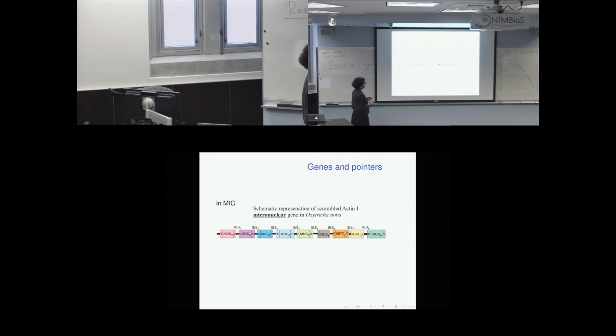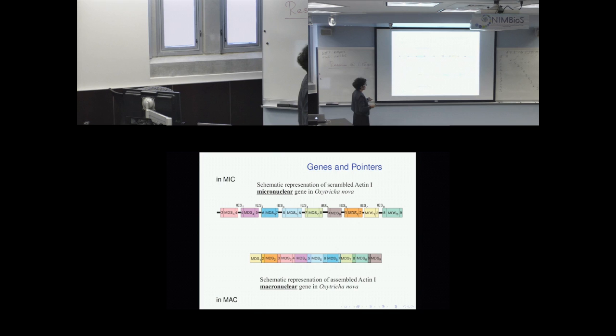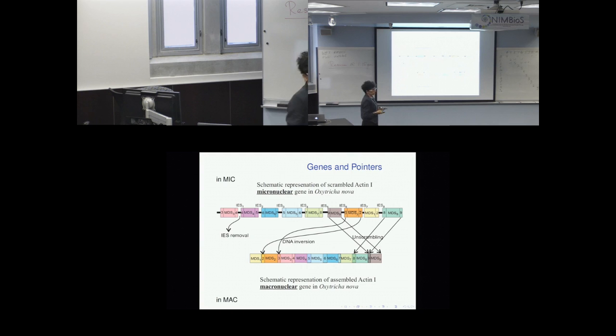Here is the structure of the gene, for example Actin-1 in Oxytricha nova. In the micronucleus, the order is MDS3, 4, 6, 5, 7, 9, 2 inverted, 1, and 8. During development of the macronucleus, all these sequences are rearranged — the pointer sequences align and a bunch of segments are eliminated. So during this process, there is removal of IESs, inversion, and unscrambling of the genes. This is the process we are trying to understand.